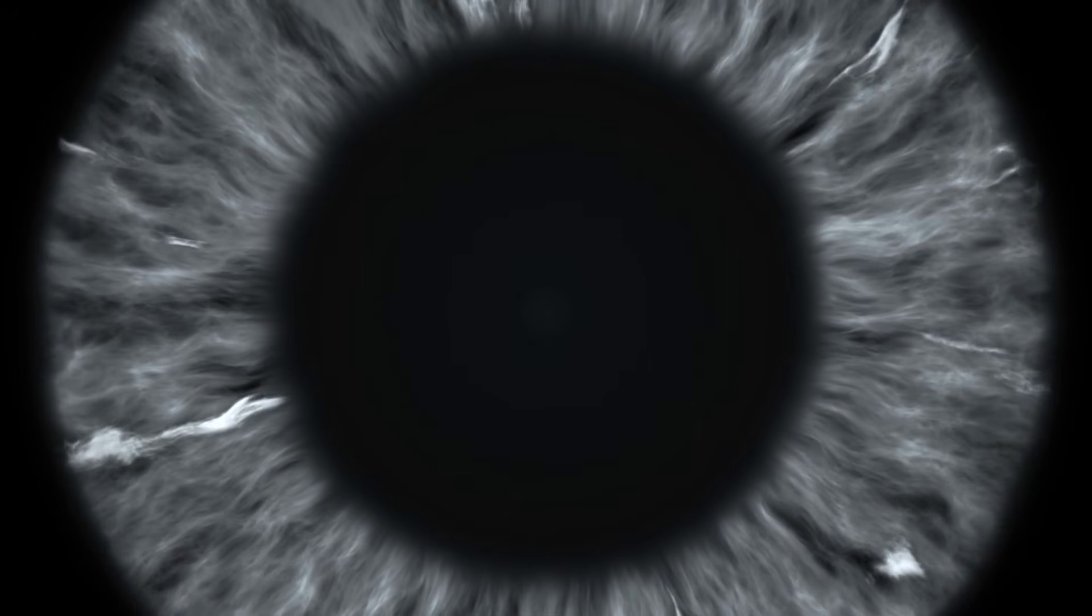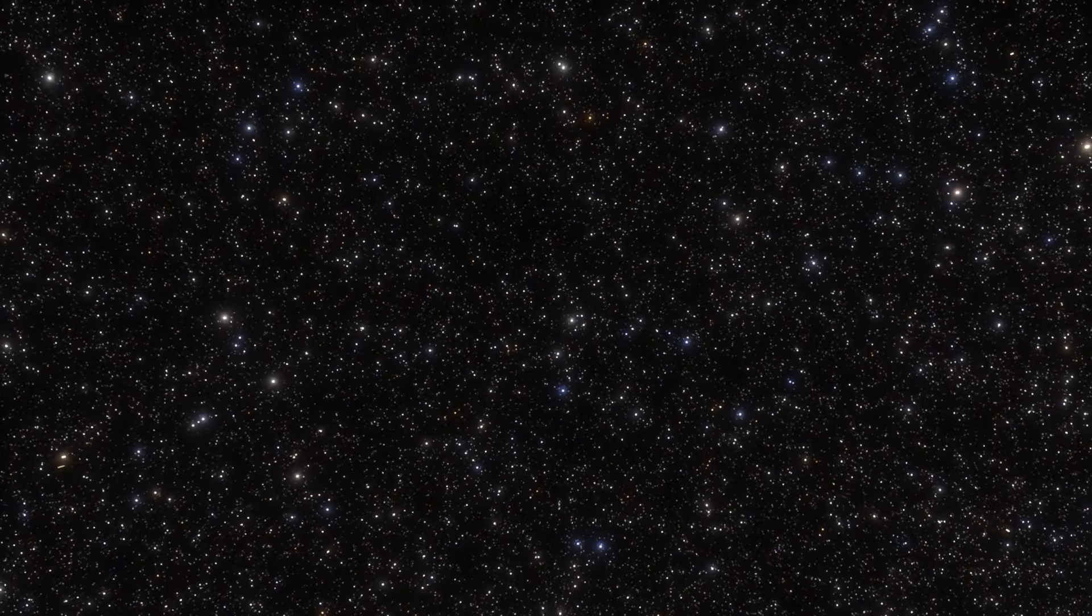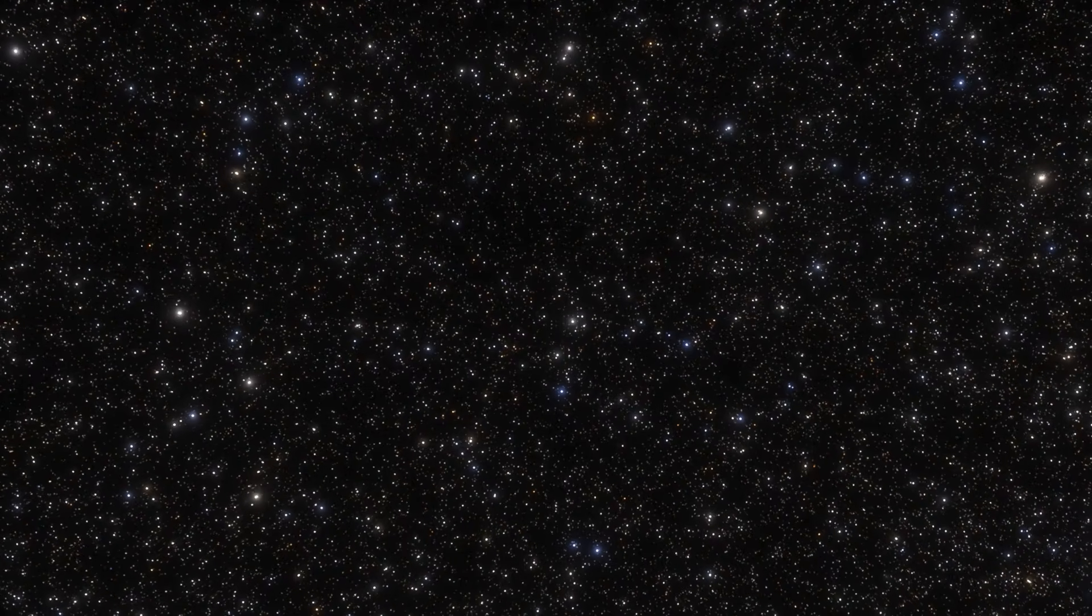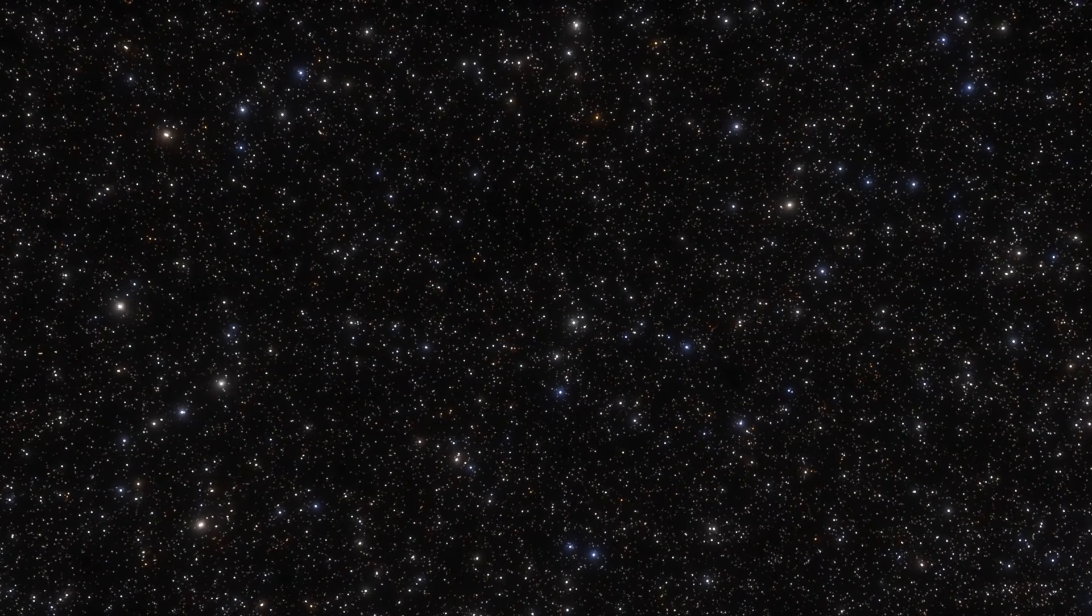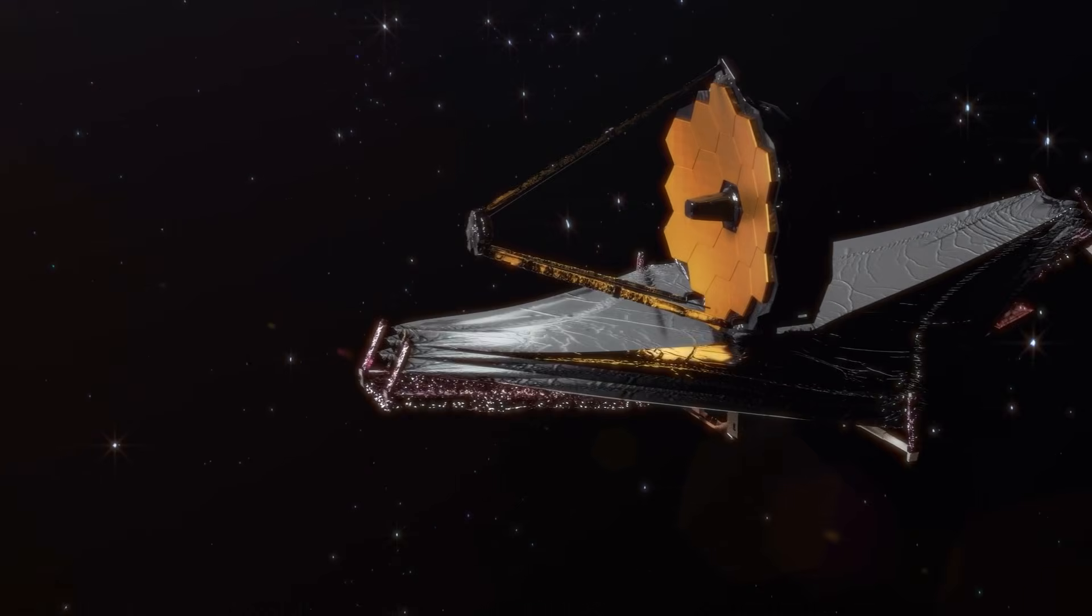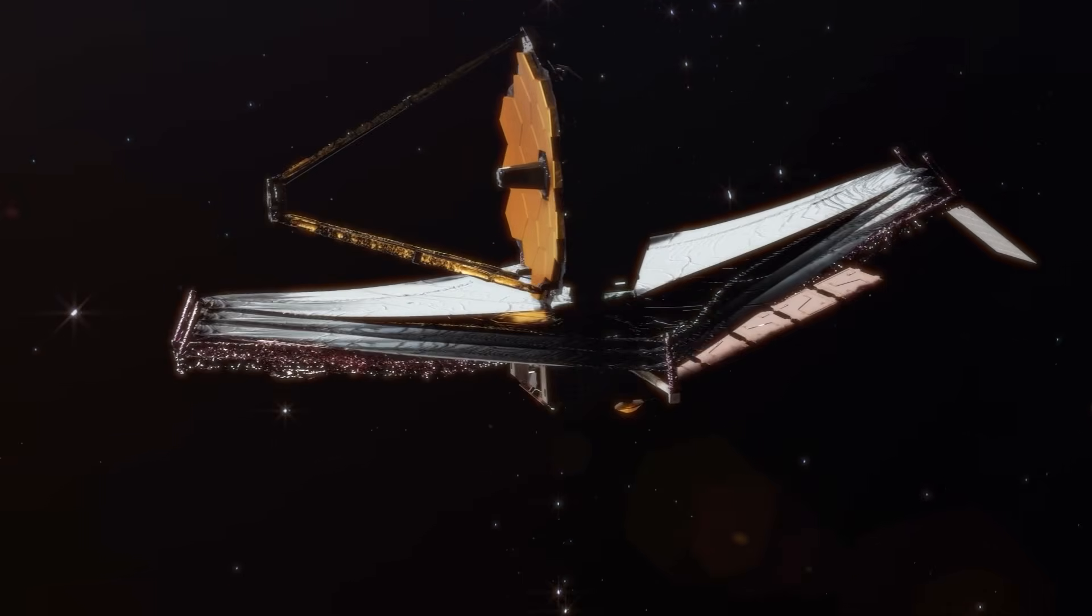The darkness of space is not the absence of light. It is light that has been stretched beyond visibility. This is why even the most powerful human eyes see blackness. To go further, we had to build machines that could see what we cannot.